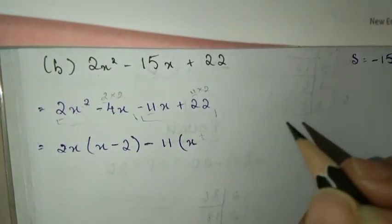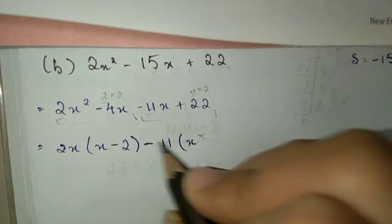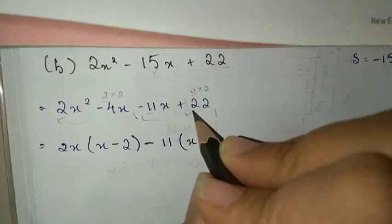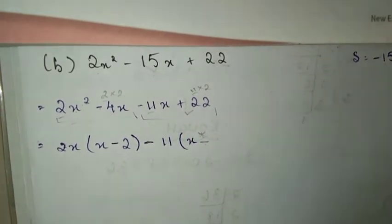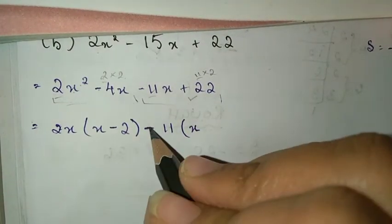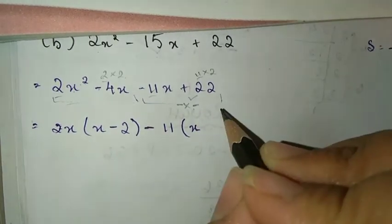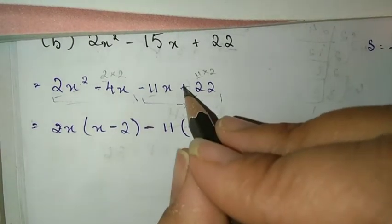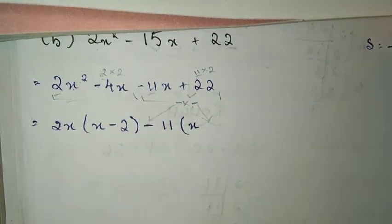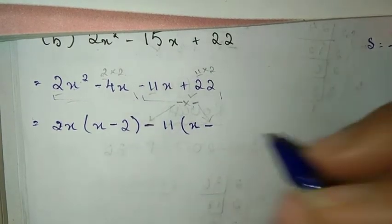If you have the same bracket, minus into minus gives plus. If you're confused, always multiply it with the sign that is outside the bracket.